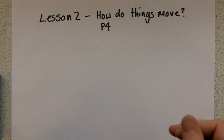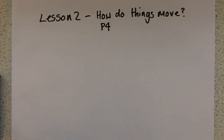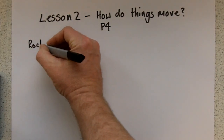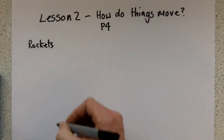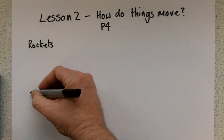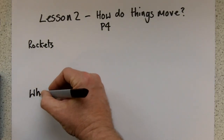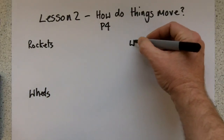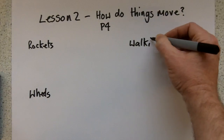Hi, welcome to this video. This is for OCR 21st Century Science. We're looking at Unit P4, explaining motion. This is Lesson 2, and we're trying to explain how things move. We're going to look at some specific examples: how rockets move, how wheels move on a bike or a car, and the idea of walking.